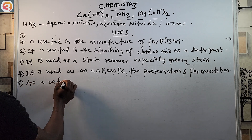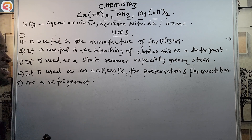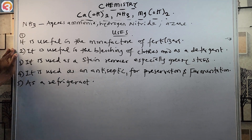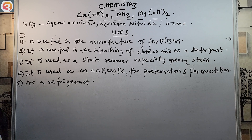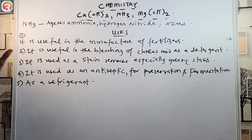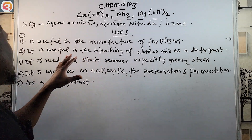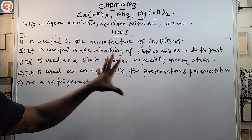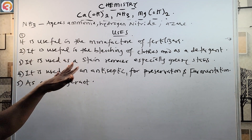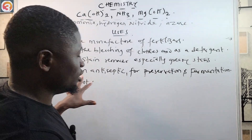And lastly, ammonia is also used as a refrigerant. So the uses of aqueous ammonia — hydrogen nitride or azine — include: manufacture of fertilizers, bleaching of clothes, as a detergent, stain remover for greasy stains, antiseptic, preservation, fermentation, and as a refrigerant.